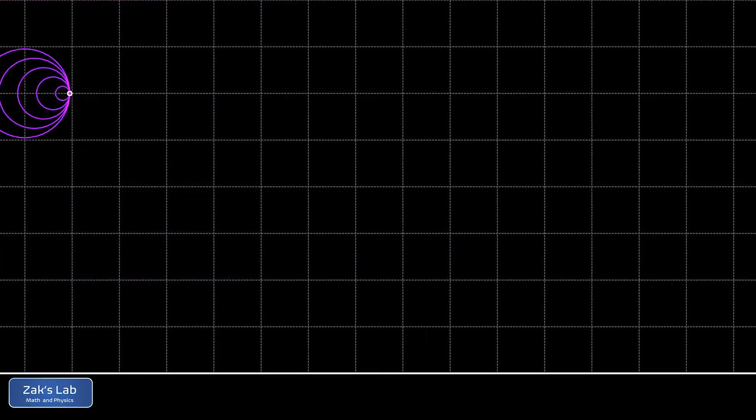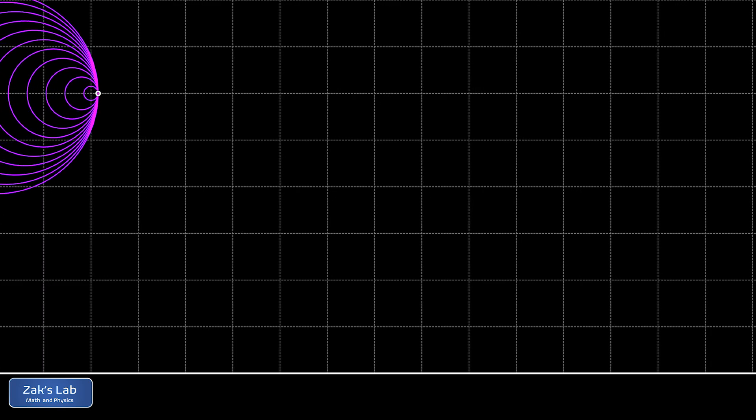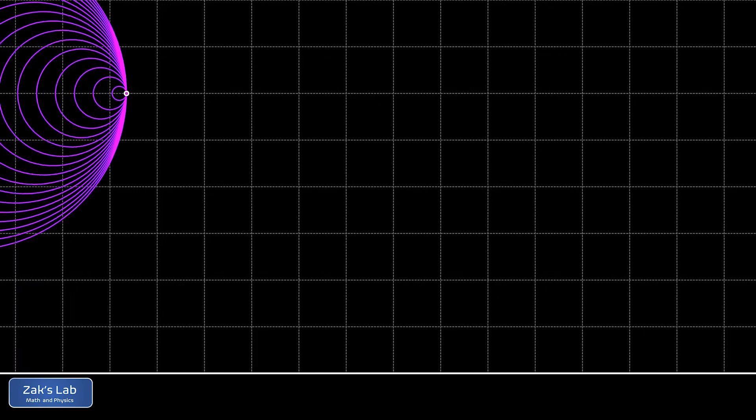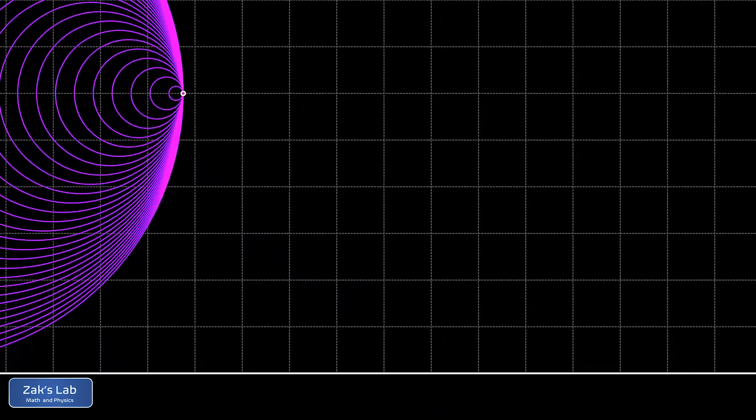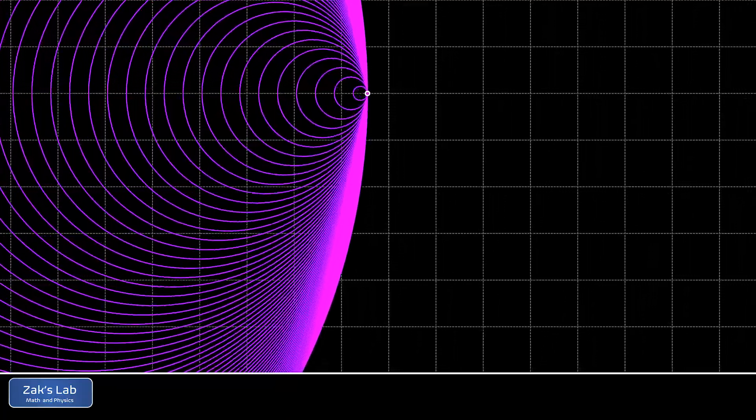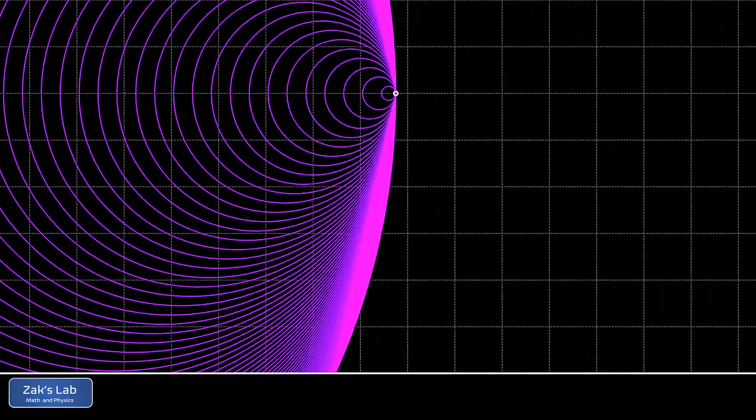Now we speed up to Mach 1, the speed of sound, and we see something really interesting happening in front of the plane. All the wave fronts are piled up in the same place because the plane is moving the same speed as the sound waves. This pileup of wave fronts is actually what creates the so-called sound barrier, creating extremely high pressure right in front of the plane as it approaches the speed of sound.